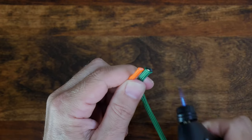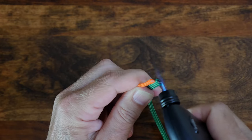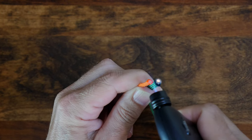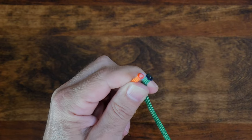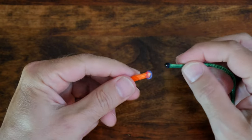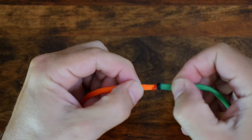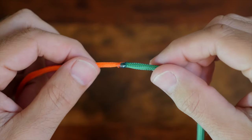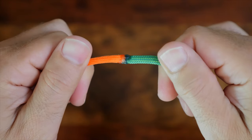We can now join our two cords by melting the ends with our lighter and then pressing them together. Be careful, melted paracord is hot so give it a moment to cool before you touch it. It'll only take a few seconds to cool down.